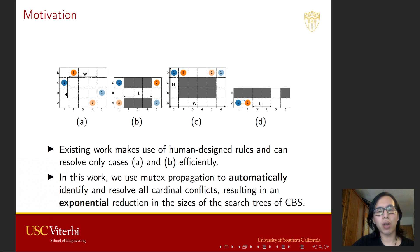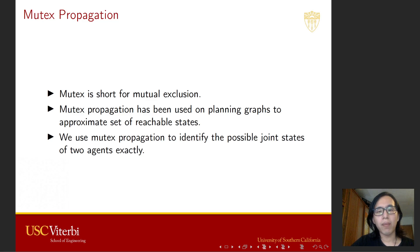Existing work makes use of human-designed rules and can only resolve case A and case B. In this work, we use mutex propagation to automatically identify and resolve all cardinal conflicts, giving us an exponential reduction in the size of the CBS search tree in some cases. Mutex is short for mutual exclusion. Mutex propagation has been used on planning graphs to approximate the set of reachable states. Here, we use mutex propagation to identify the possible joint states of two agents.